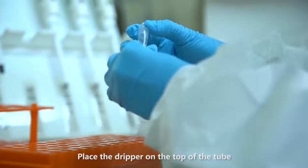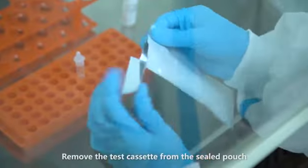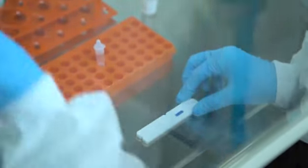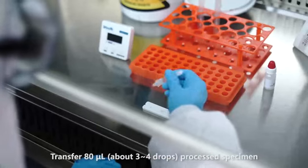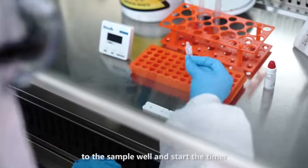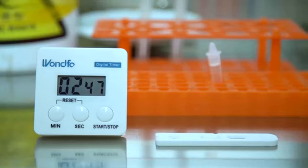Place the dripper on the top of the tube. Remove the test cassette from the sealed pouch and place it on a level surface. Transfer 80 microliters, about 3 to 4 drops, of processed specimen to the sample well and start the timer. Read the result at 15 to 20 minutes.